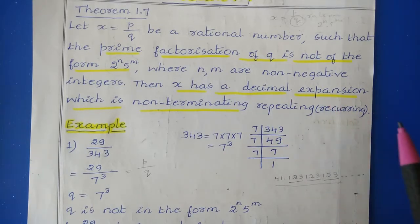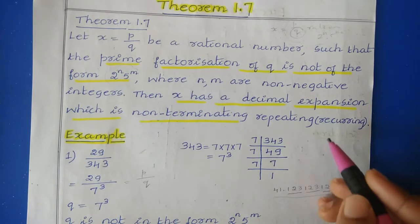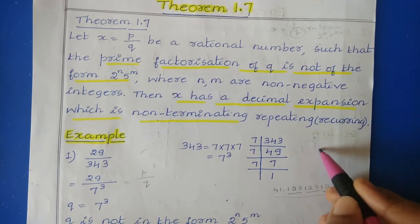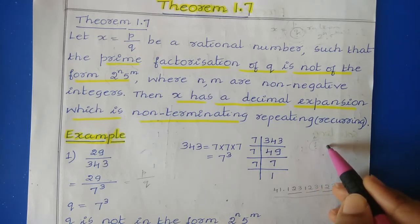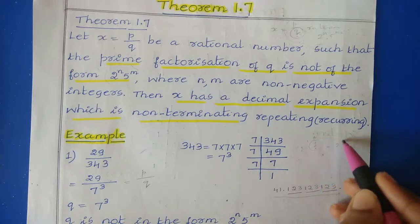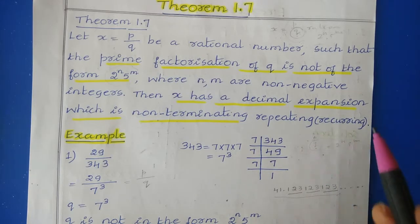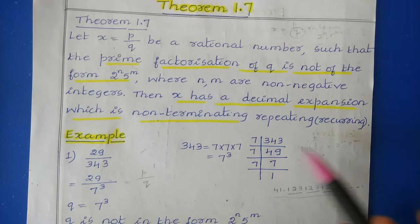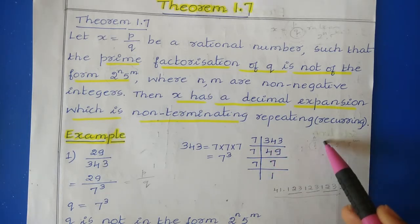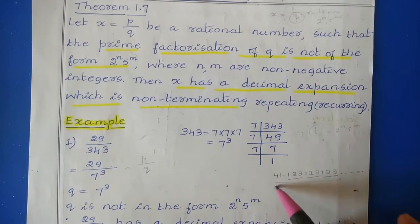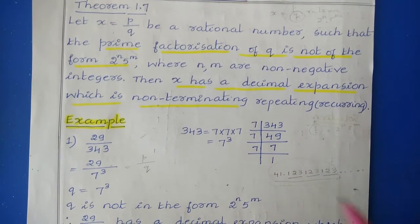So in this theorem, they are saying that if we take any number of the form p by q which is a rational number and the prime factorization of q is not in the form 2 to the power n into 5 to the power m, then that number has a decimal expansion which is non-terminating repeating.